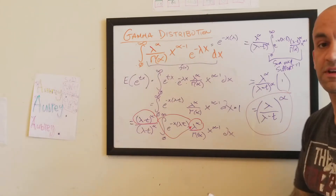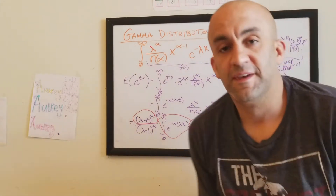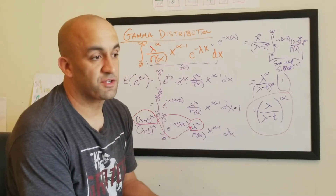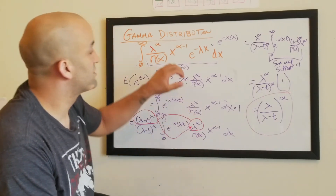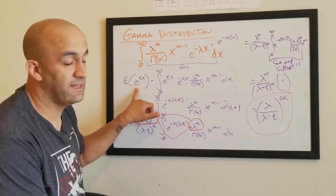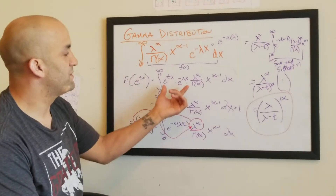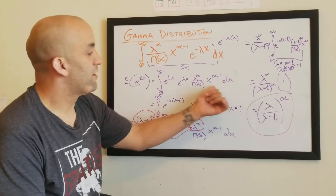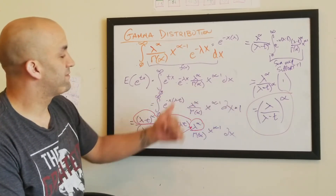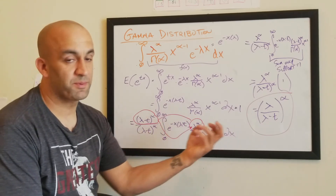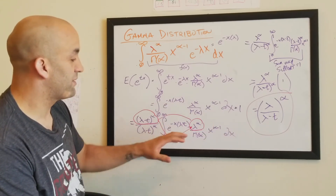And there's your moment generating function for the gamma distribution. So remember, what we're going to do is take our distribution, find the expected value of e to the tx, which means we take e to the tx times our gamma function, and then combine like terms. We're going to find some way to manipulate things so that we have a kernel that matches.